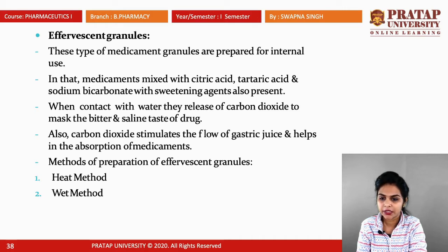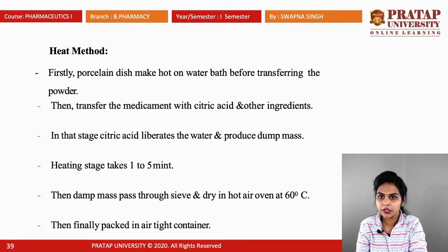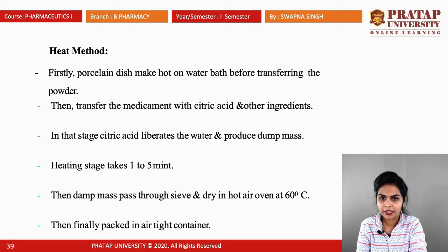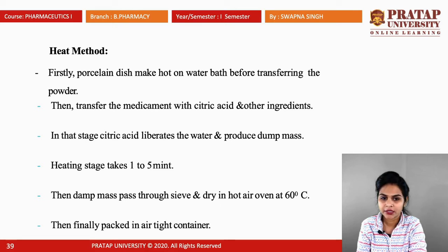There are two methods for preparation of effervescent granules: the heat method and the wet method. In the heat method, a porcelain dish is made hot on a water bath before transferring the powder. Once the water bath is hot, all the medicament with citric acid and other ingredients are transferred. Citric acid liberates water and produces a damp mass. The heating stage takes one to five minutes. The damp mass is passed through a sieve and dried in a hot air oven at 60°C. After drying, the powder is packed in an airtight container.